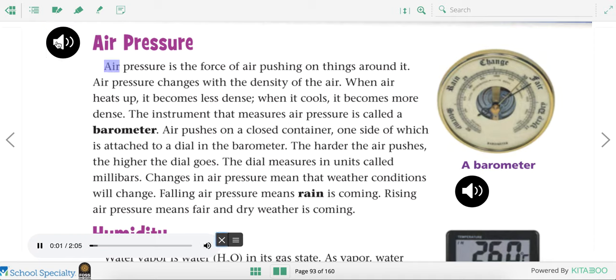Air pressure is the force of air pushing on things around it. Air pressure changes with the density of the air. When air heats up, it becomes less dense. When it cools, it becomes more dense. The instrument that measures air pressure is called a barometer. Air pushes on a closed container, one side of which is attached to a dial in the barometer. The harder the air pushes, the higher the dial goes. The dial measures in units called millibars. Changes in air pressure mean that weather conditions will change. Falling air pressure means rain is coming. Rising air pressure means fair and dry weather is coming.